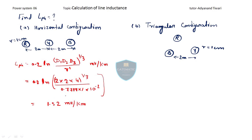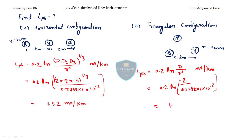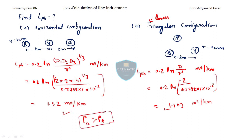For the same wire arranged in a triangular configuration with all distances equal to 2 m and the same radius, using L_phase = 0.2 × ln(D / R'): D = 2 m, R' = 0.7788 × 10⁻² m, giving approximately 1.109 mH per km. Comparing both: inductance is lower in the triangular configuration and higher in horizontal configuration. Since power transfer capability is inversely proportional to line reactance, power transfer capability in triangular configuration is greater than horizontal.